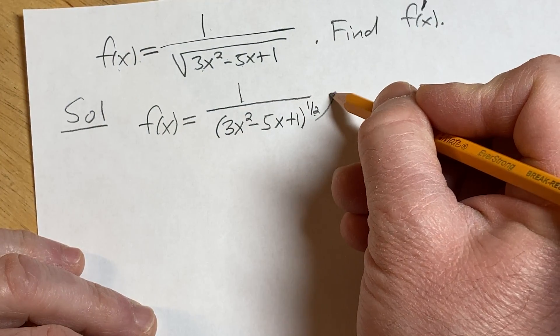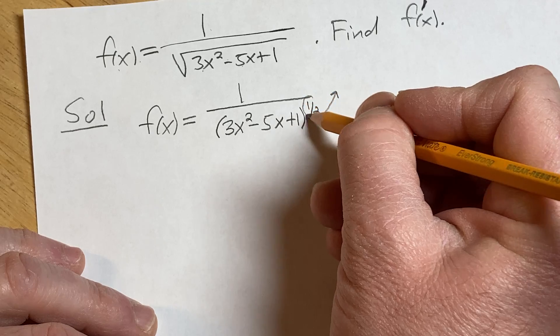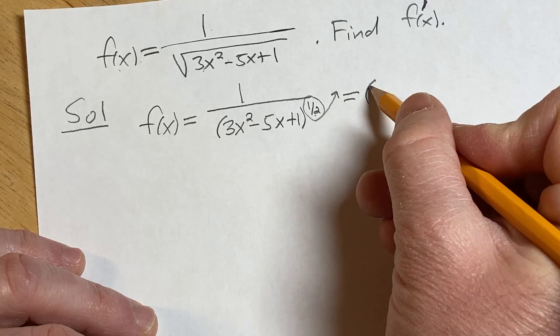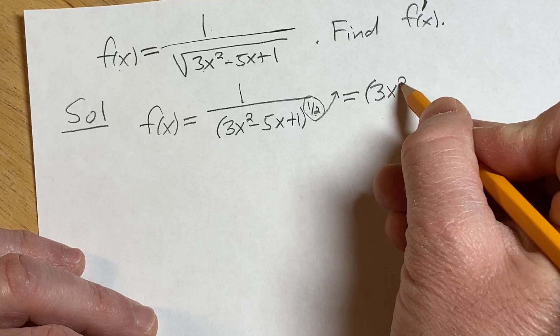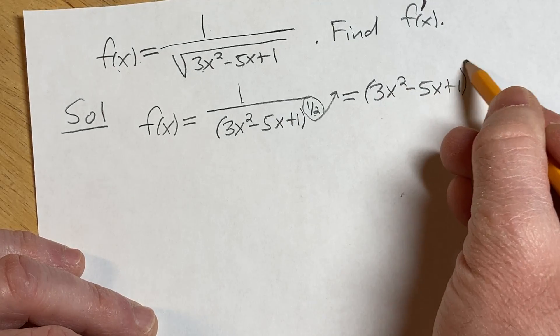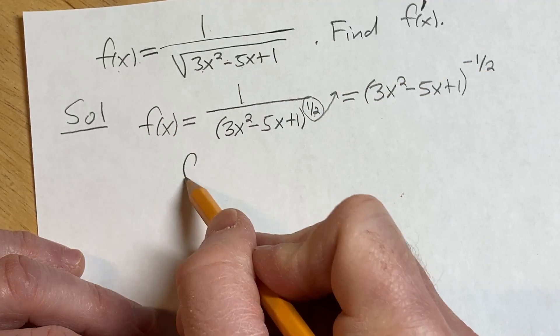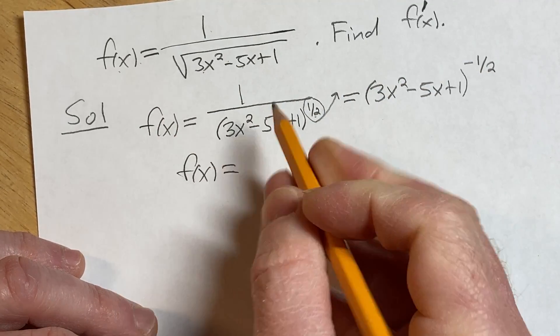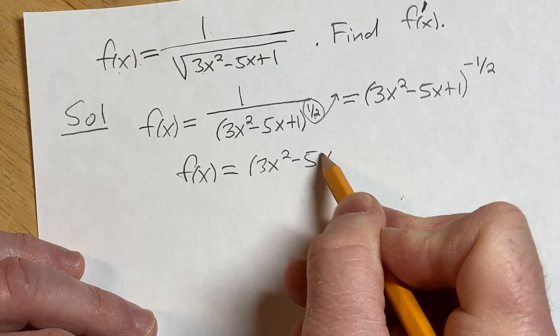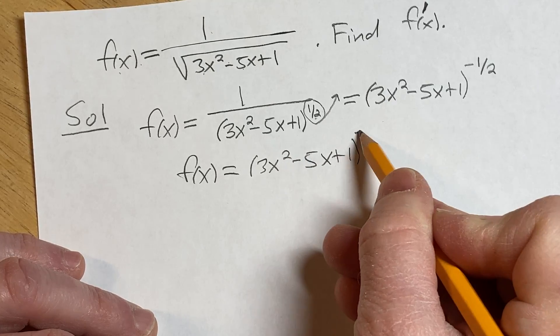Now we're going to bring this upstairs, and when we do that, this exponent will become negative. So this is equal to parentheses 3x squared minus 5x plus 1 to the negative 1 half. f of x is equal to parentheses 3x squared minus 5x plus 1 to the negative 1 half.